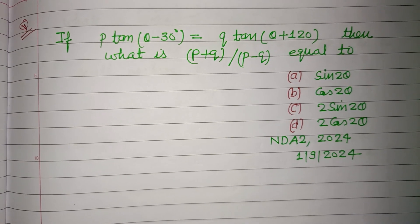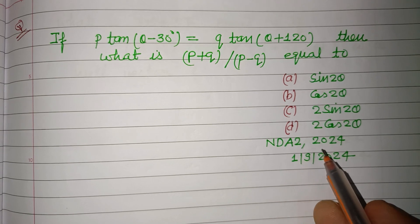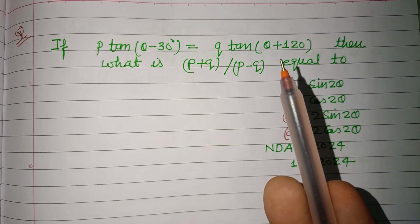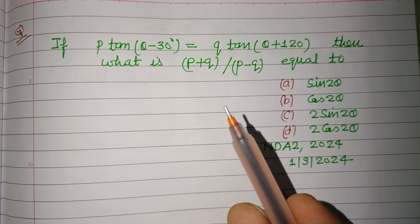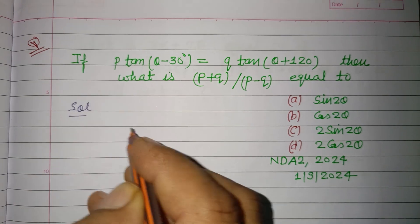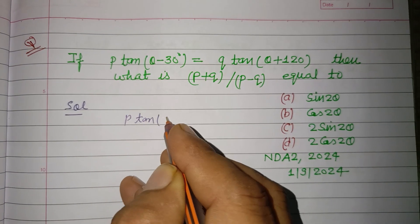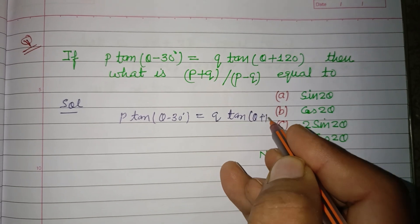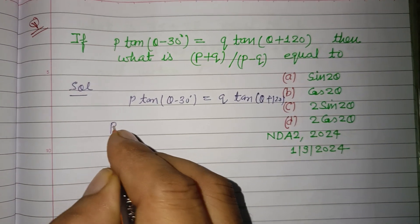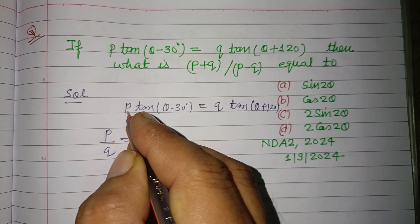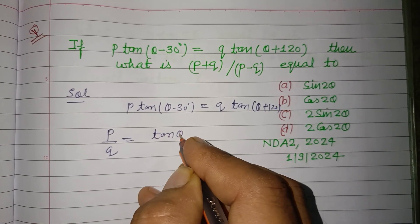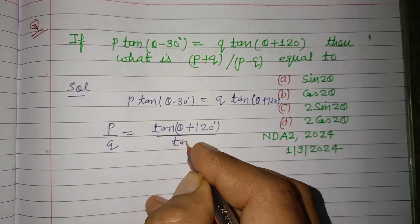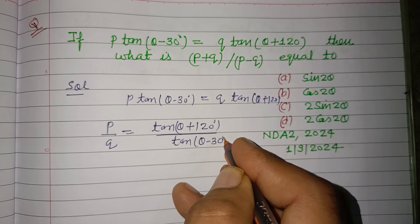Hello viewers, warm welcome to this YouTube channel. This question is from NDA Second 2024: if p·tan(θ-30) = q·tan(θ+120), then what is (p+q)/(p-q) equal to? Here, p·tan(θ-30) is given equal to q·tan(θ+120), so dividing, p/q = tan(θ+120) / tan(θ-30).